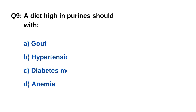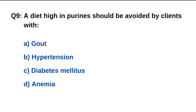Question number 9. A diet high in purines should be avoided by clients with which condition? The right option is A: Gout.